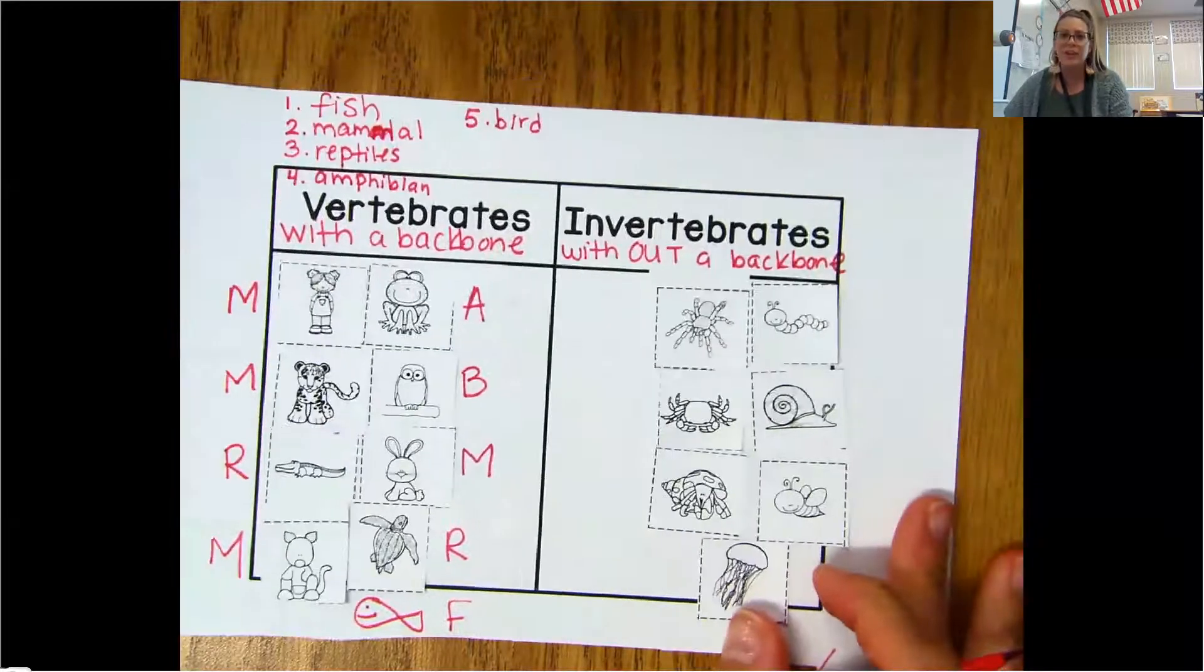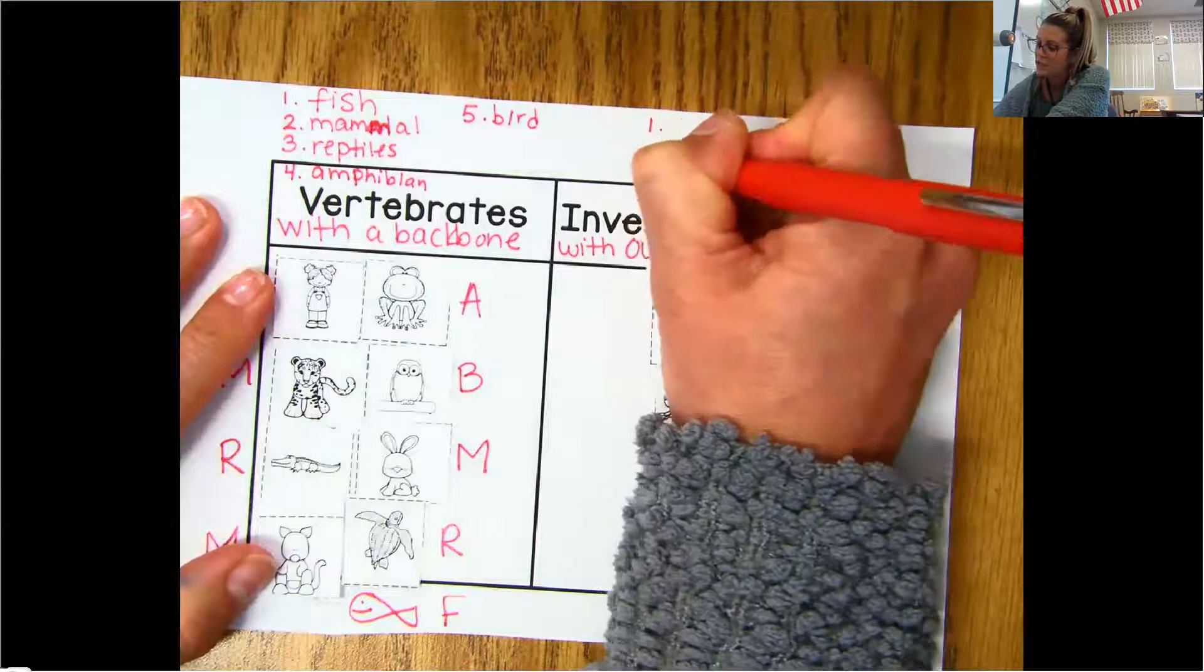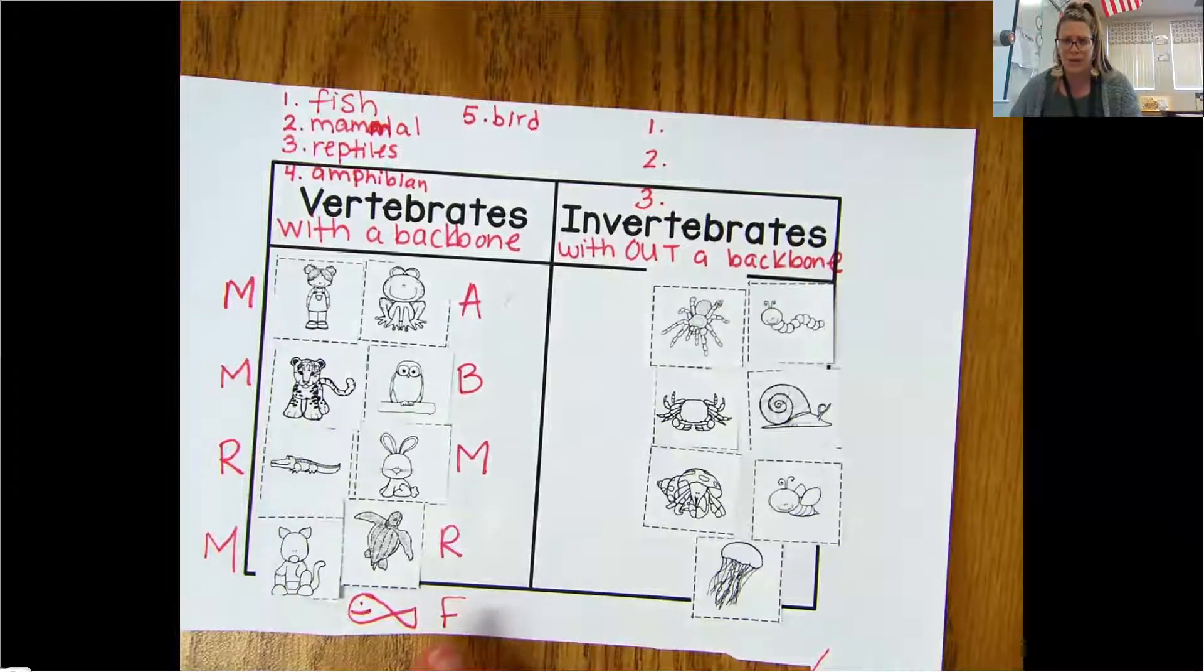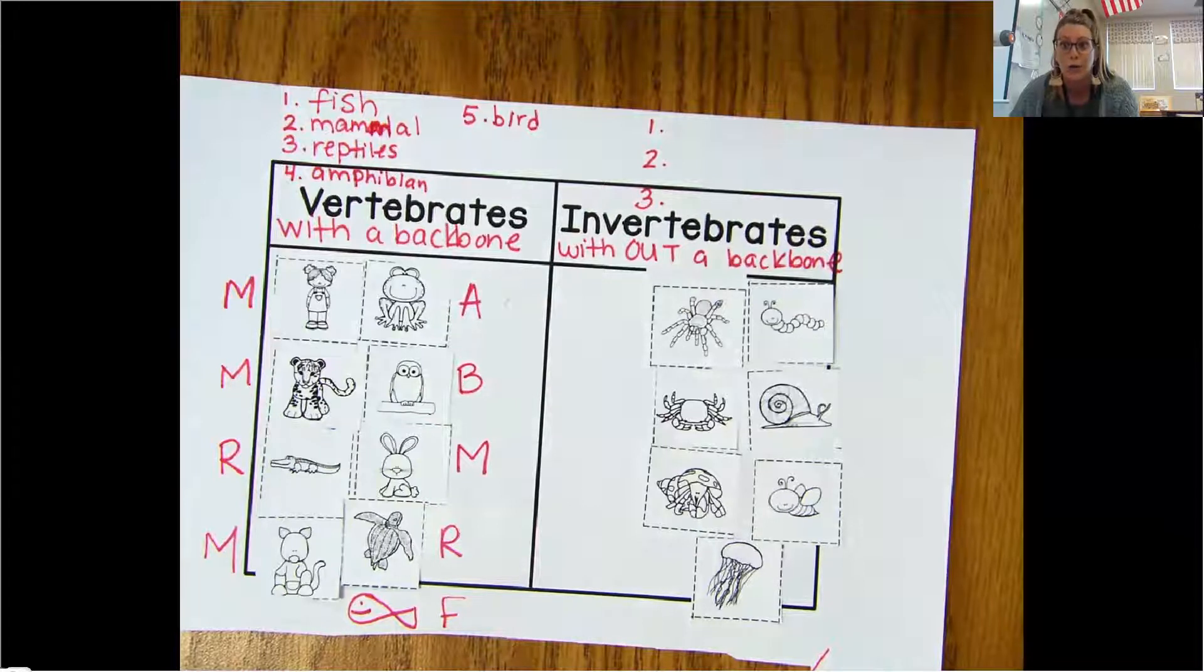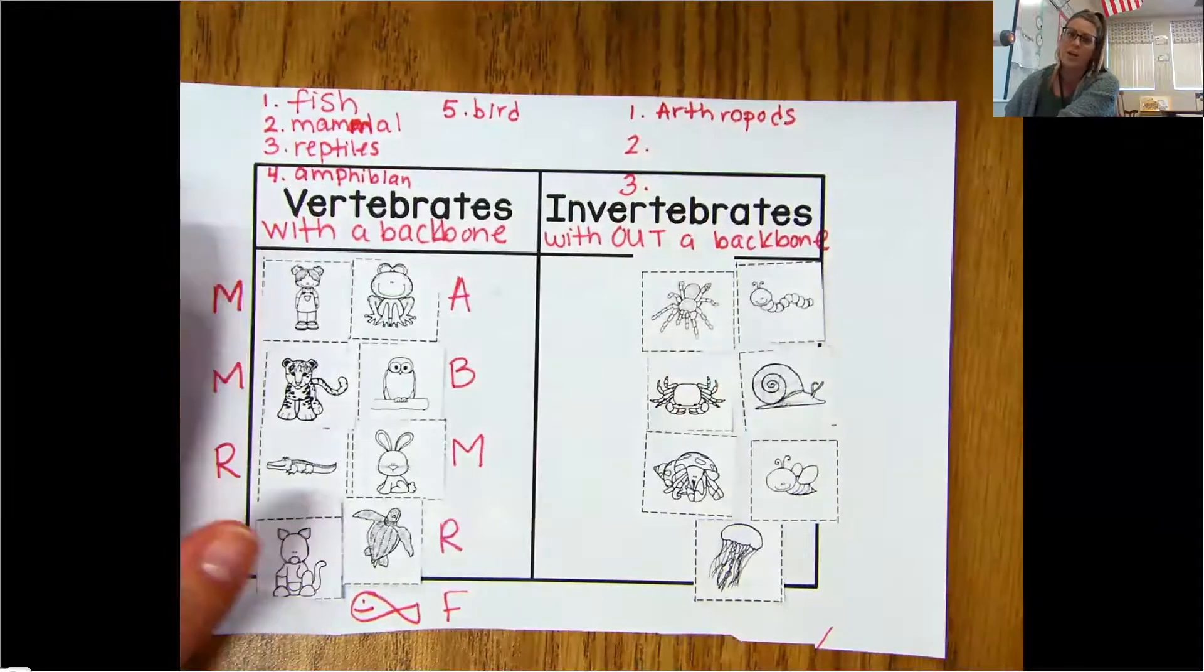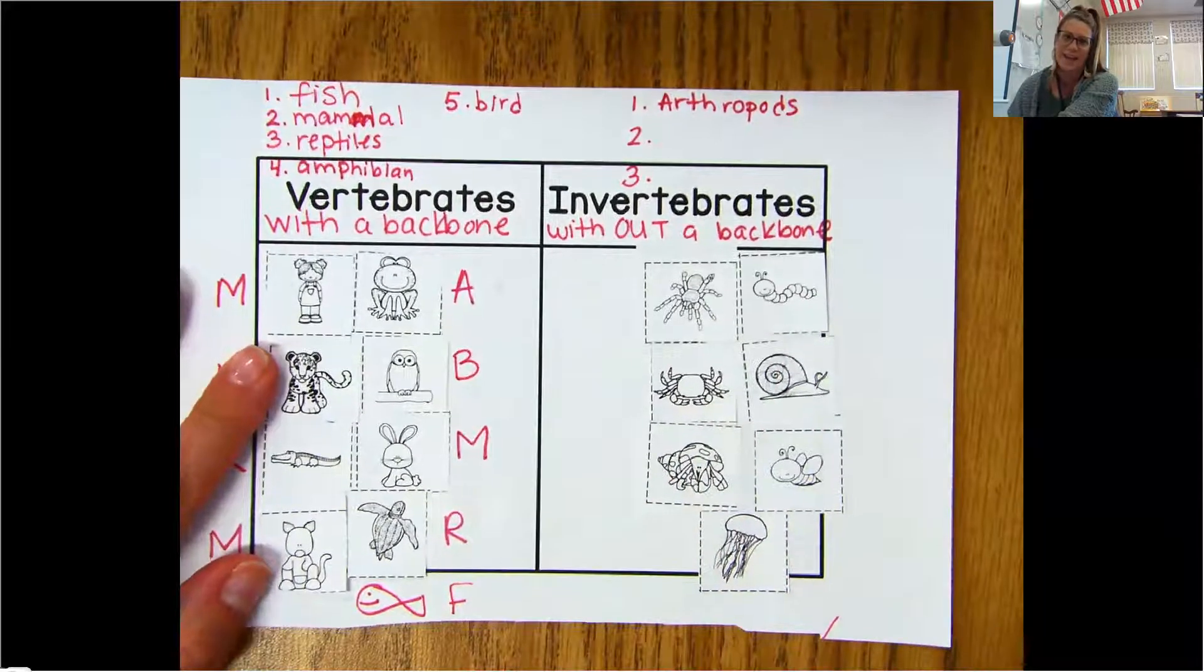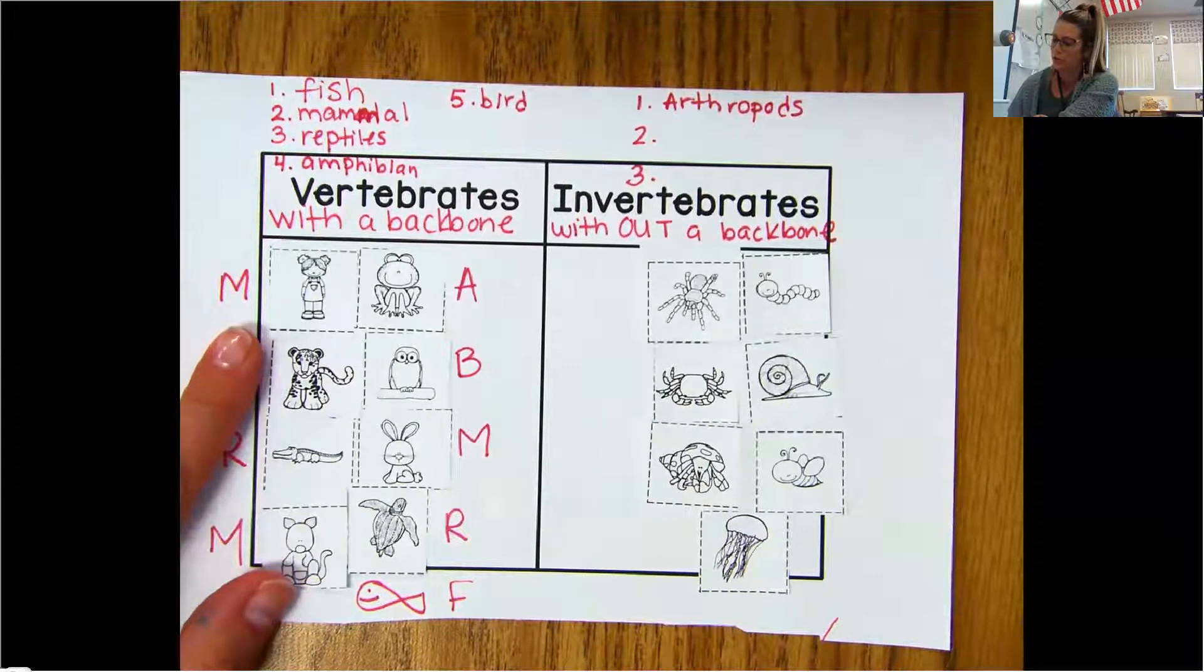And then yesterday, we also reviewed the invertebrates. And there were three different groups or classes for the invertebrates. And I noticed after I was re-watching my video that I was saying the first one wrong. I was saying anthropod. But what I was really meaning to say was arthropod. Do you remember a lot of animals fall under that category, the arthropod? Which one of these would we put an A next to? Take a minute and think about it. Which ones are considered arthropods?